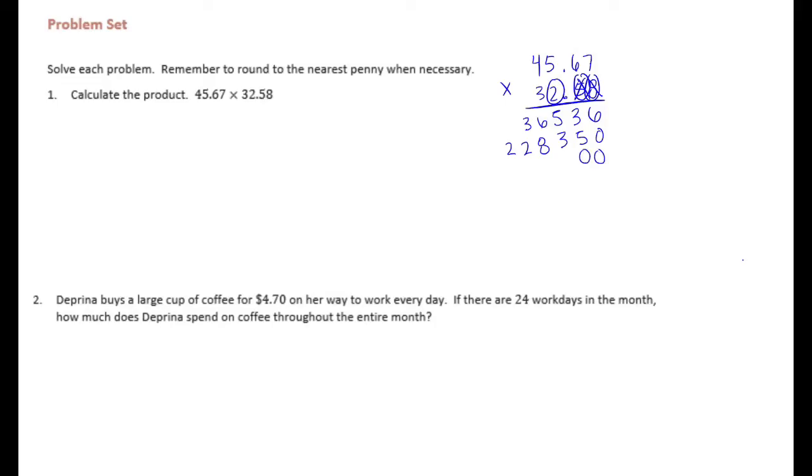Carry the 2. 5 times 4 is 20 plus 2 is 22. Erase what we've carried. Done with the 5. On to the 2. 2 placeholders. 2 times 7 is 14, carry the 1. 2 times 6 is 12 plus 1 is 13. Carry the 1. 2 times 5 is 10 plus 1 is 11, carry the 1. 2 times 4 is 8 plus 1 is 9. Erase those. 3 placeholders. On to the 3. 3 times 7 is 21, carry the 2. 3 times 6 is 18 plus 2 is 20. Carry the 2. 3 times 5 is 15 plus 2 is 17. Carry the 1. 3 times 4 is 12 plus 1 is 13.